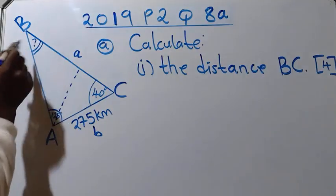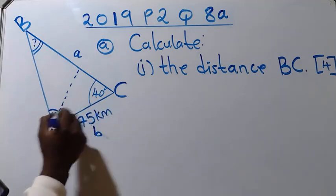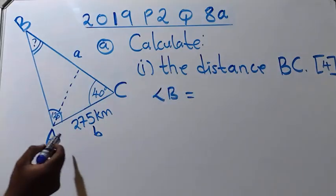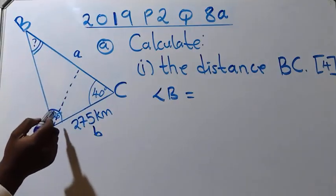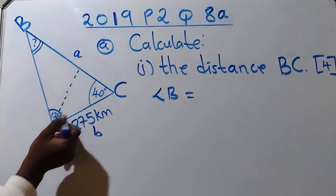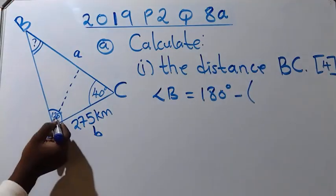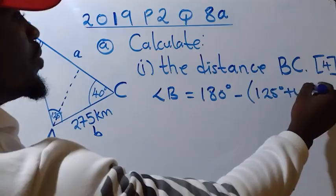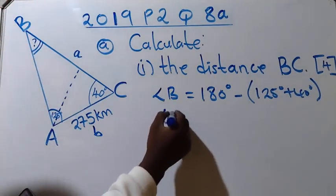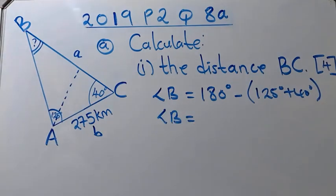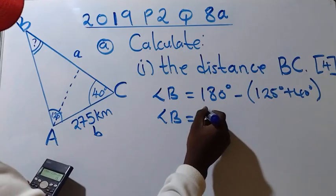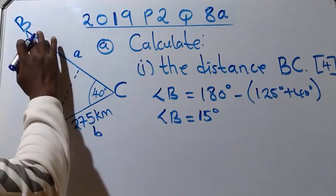To find angle B, recall that the sum of angles in a triangle is 180°. So angle B = 180° − (125° + 40°). Punching into the calculator: 180 − (125 + 40) gives us 15°. So angle B is 15 degrees.